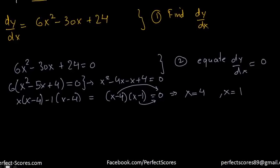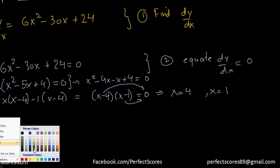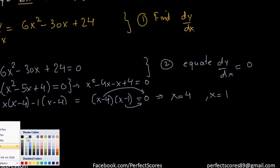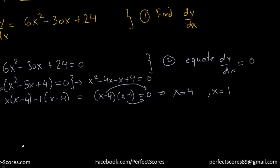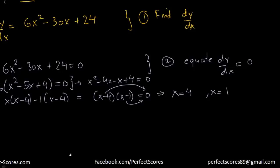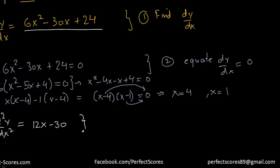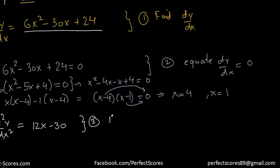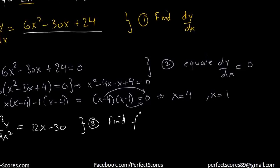Now we need to determine whether these are maximum or minimum points. Step 3 is to find the double derivative d²y/dx². Differentiating dy/dx = 6x² - 30x + 24 gives d²y/dx² = 12x - 30.